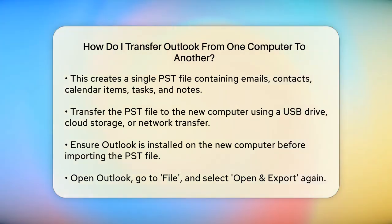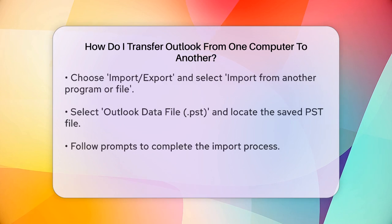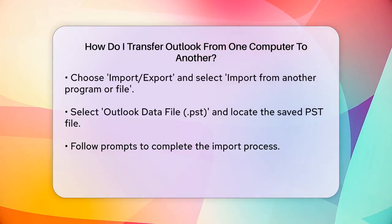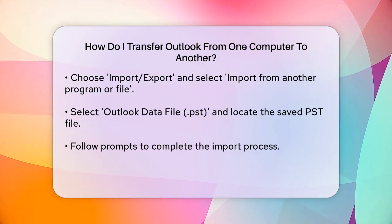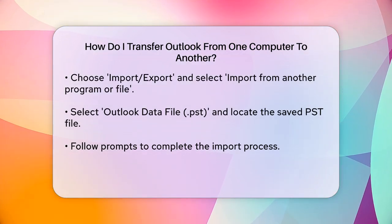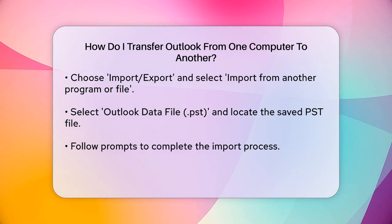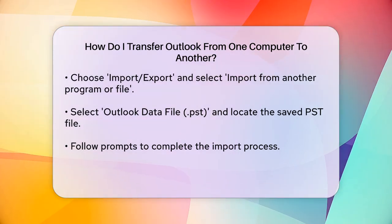On your new computer, you'll need to set up Outlook if it's not already installed. After installing Outlook, you can import the PST file you created earlier. To do this, open Outlook, go back to the File menu, select Open & Export, and then choose Import/Export again. This time, select Import from another program or file and choose Outlook Data File (.pst). Navigate to where you saved your PST file and follow the prompts to import it.